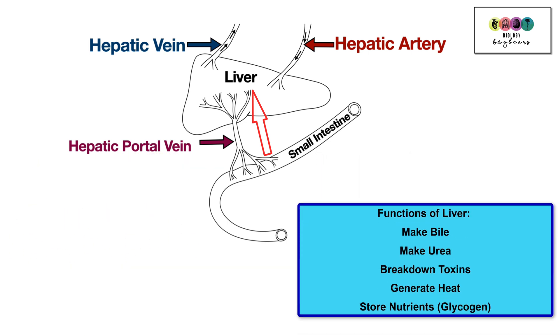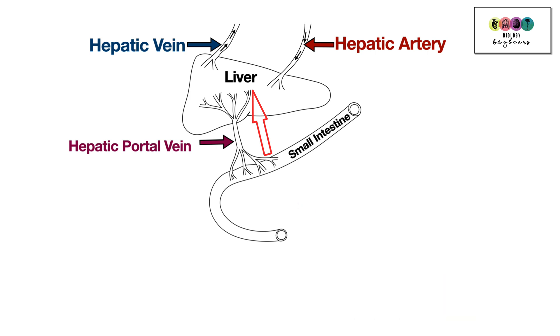The functions of the liver: the liver produces bile, it makes urea, it breaks down toxins, it generates heat, and it stores nutrients such as glycogen and fat-soluble vitamins. These are just some of the functions of the liver.